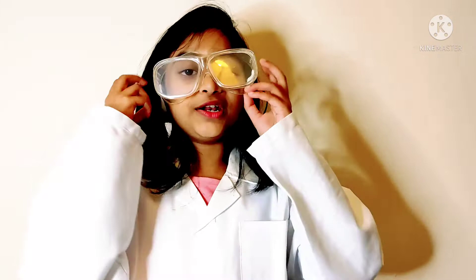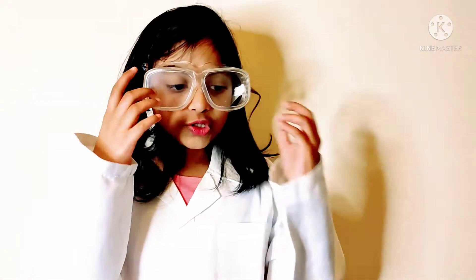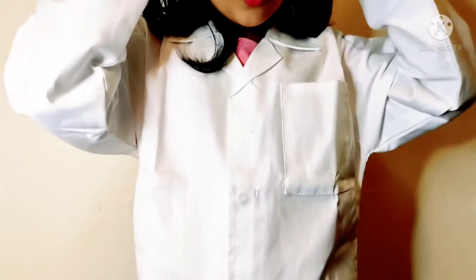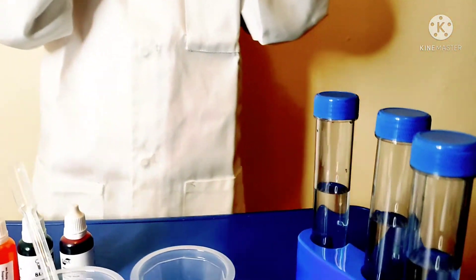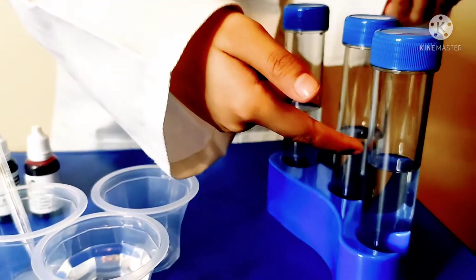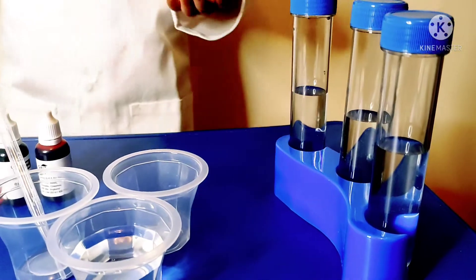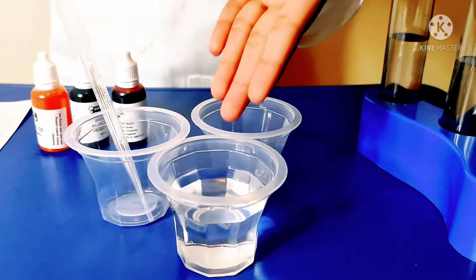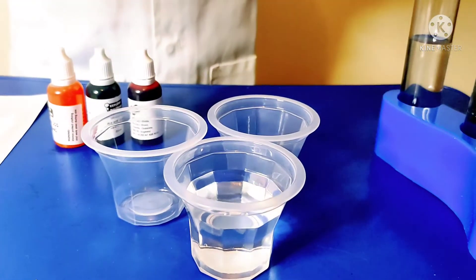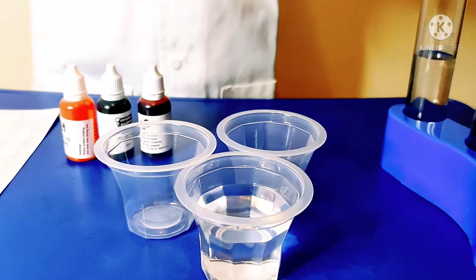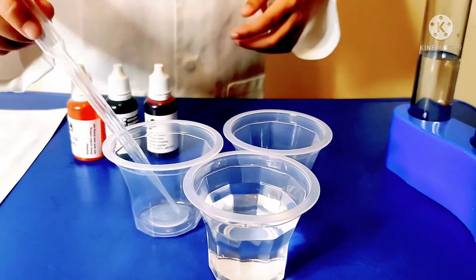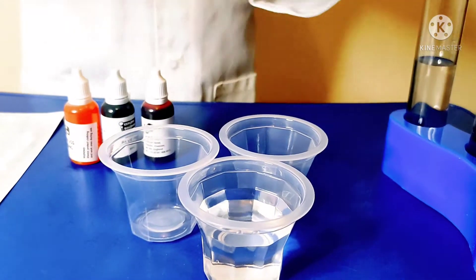First I'm wearing my goggles. And now I'll tell you what I've done so far. First I filled the test tubes with some cold water, halfway. As you can see they're all halfway. And then I put one of the cups with water so when I'm putting a different color in, I can clean this up and then put a different color in.